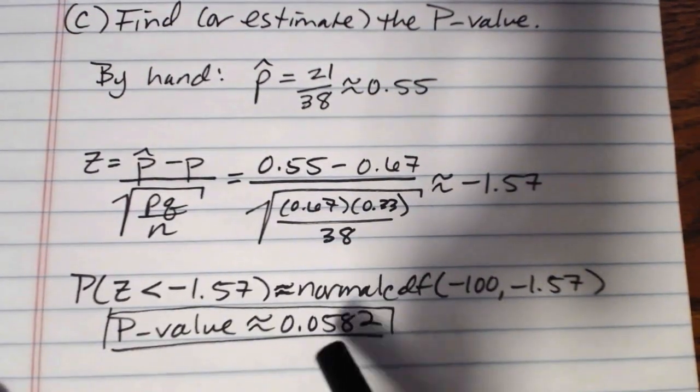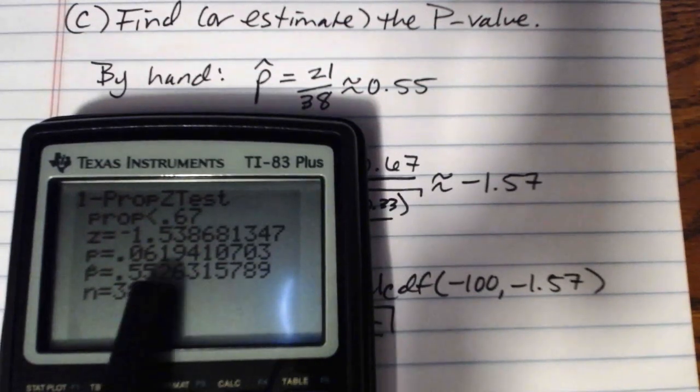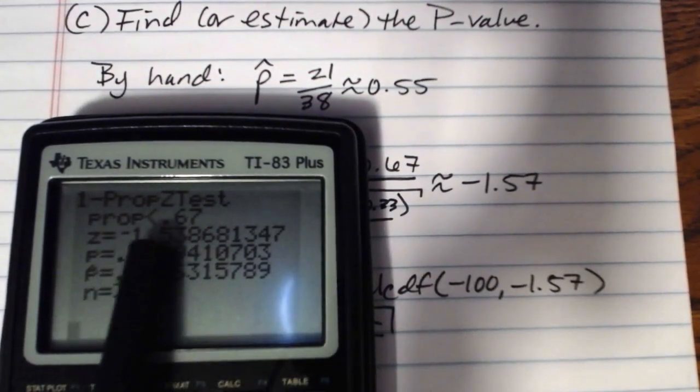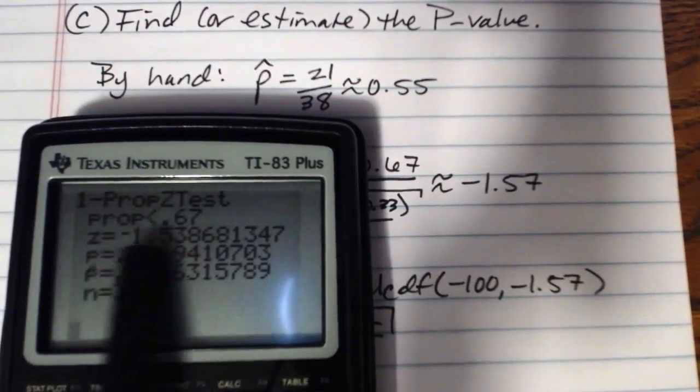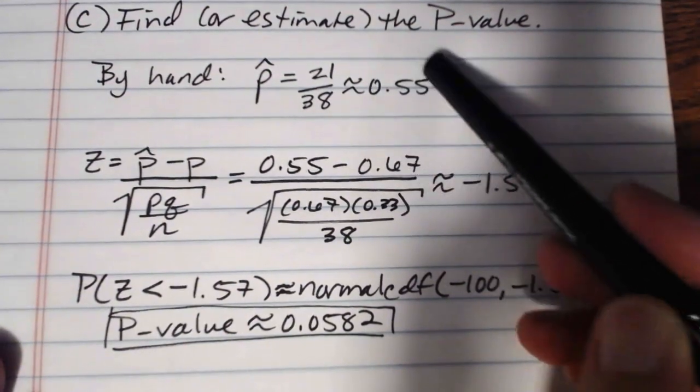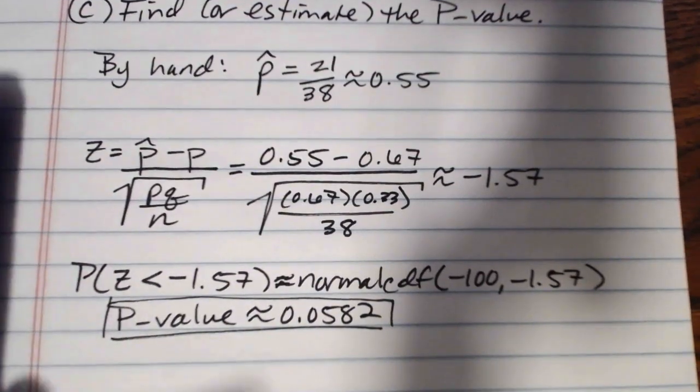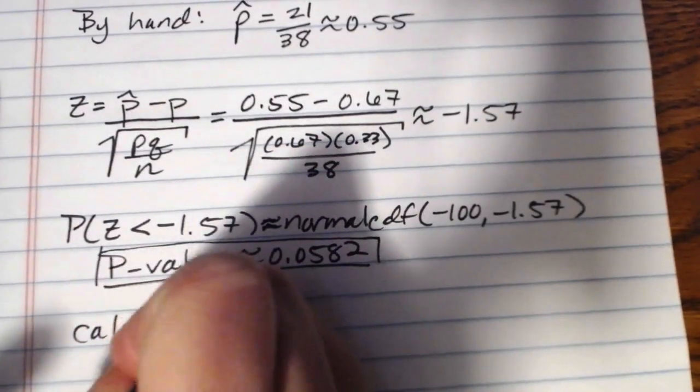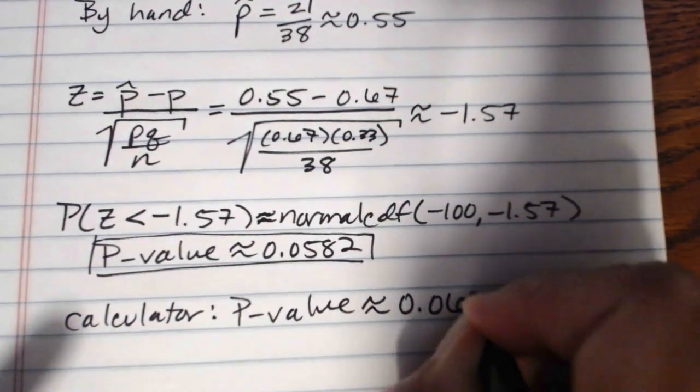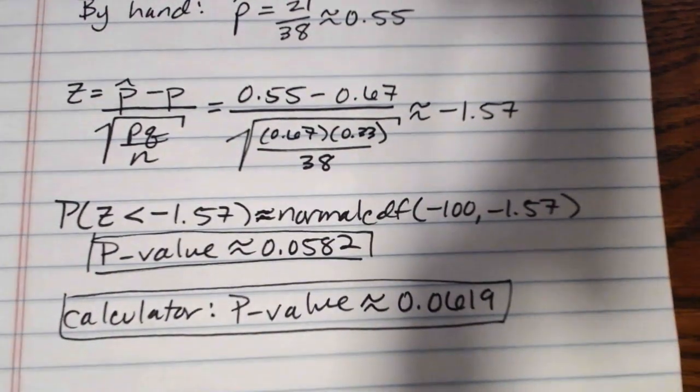The difference that we got here doing it by hand versus doing it on the calculator is simply because we did some rounding. And so that rounding propagates through. But doing it by the calculator, our P value is approximately .0619. And this is actually a better value to use than the one that we got doing it by hand because it doesn't involve any rounding error. It's actually a more accurate value.